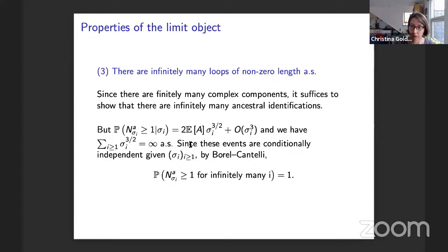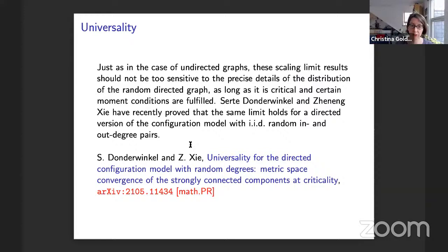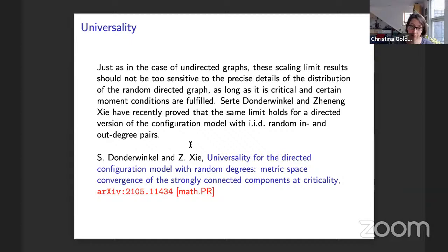To conclude, a word about universality. Just as in undirected graphs where universality classes arise for different degree distributions, these scaling limit results shouldn't be too sensitive to the precise details of the random directed graph distribution. We took the simplest random directed graph model, but as long as certain moment conditions are fulfilled and you're at a critical random directed graph, you should see something very similar. Two of my PhD students have recently proved that the same limit holds for a directed version of the configuration model with IID random in- and out-degree pairs — just posted to arXiv.